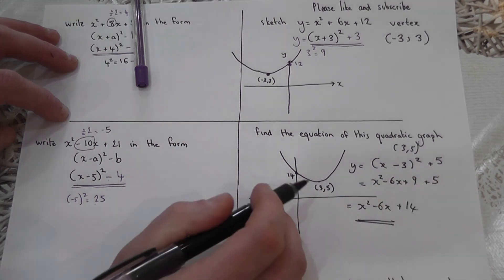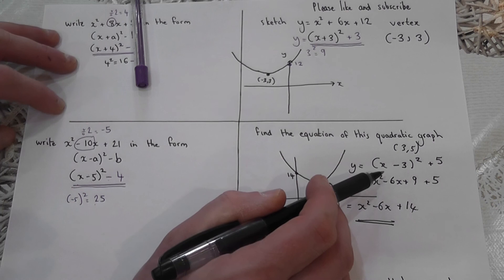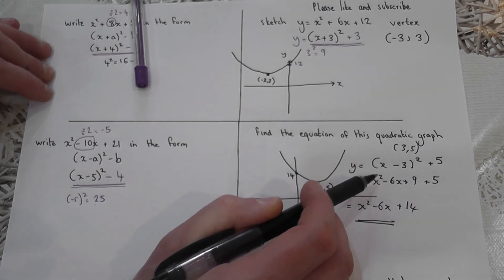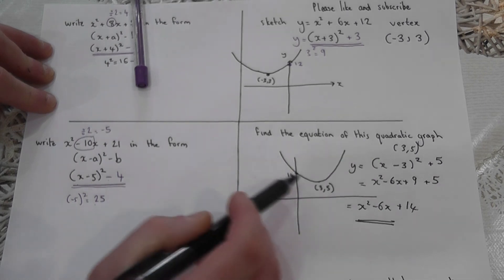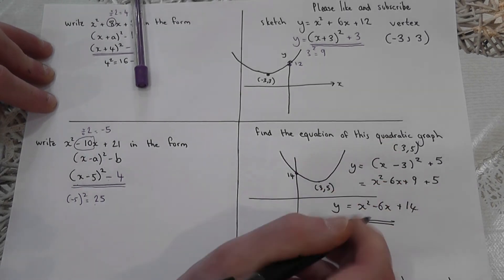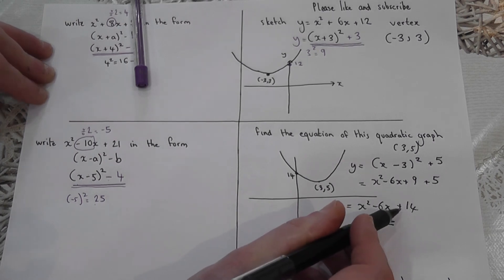And that works because the number here, the 14, is the y-intercept. And for the expansion bit, please see my other videos on expanding double brackets. So this graph here has got an equation y equals x squared minus six x plus 14.